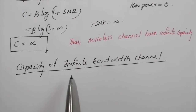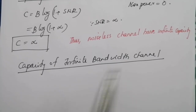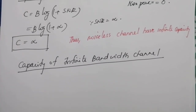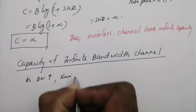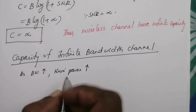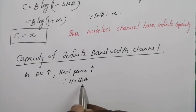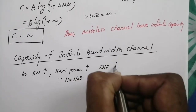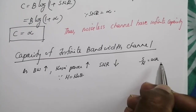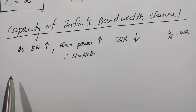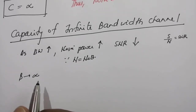Now we will find the capacity of an infinite bandwidth channel. We may expect that the capacity of an infinite bandwidth channel may be infinity, but in reality it is not infinity. This is because as bandwidth increases, the noise power also increases. As noise power increases, SNR decreases. Thus, even though bandwidth tends to infinity, the capacity does not approach infinity — instead it approaches an upper limit, which we need to find.